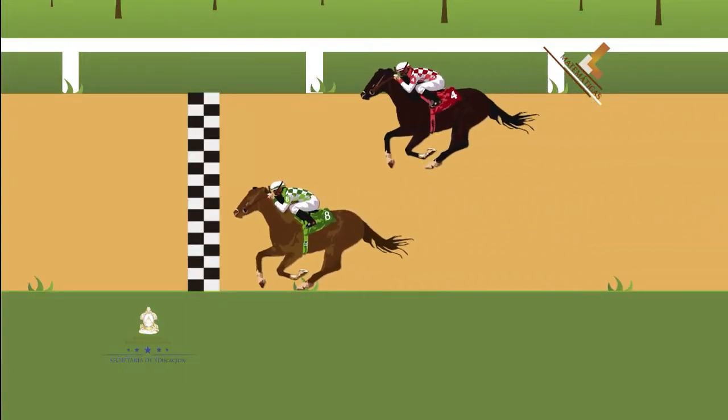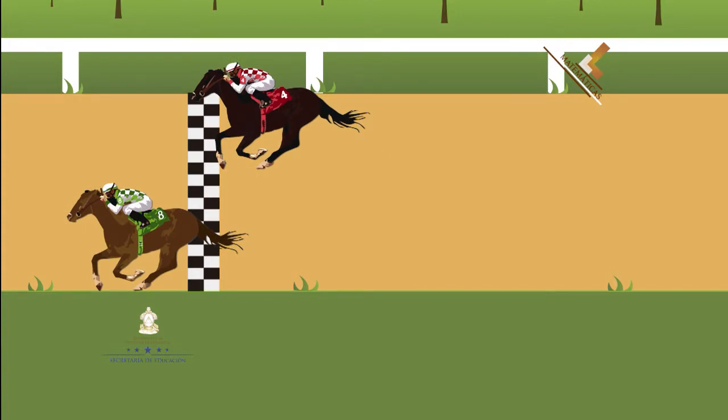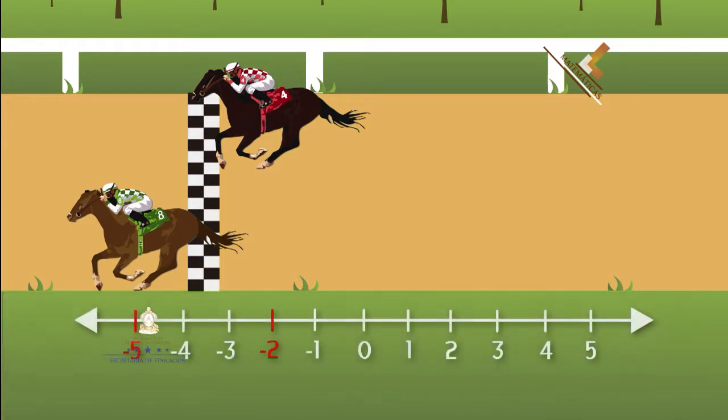El ganador es el caballo capa verde. Descubramos cuál es la diferencia final entre ambos caballos. Para descubrir la diferencia, utilizaremos la recta numérica para observar la posición final de cada caballo. Luego vamos a realizar la diferencia.